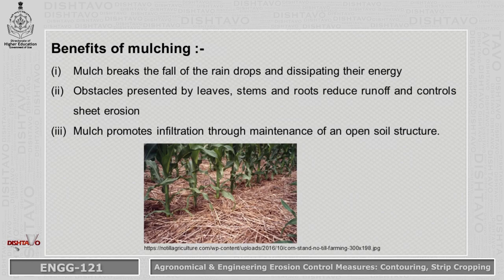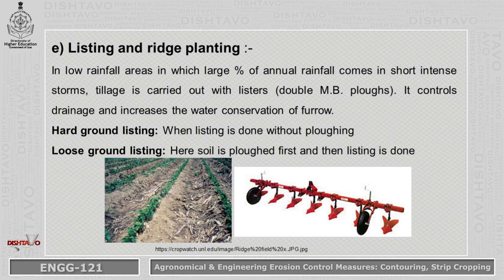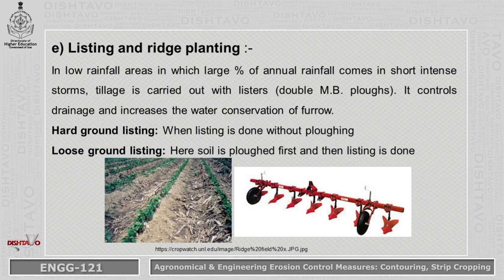Benefits of mulching include breaking raindrops and dissipating their energy to avoid soil erosion, promoting water infiltration into the soil, and reducing evaporation from the soil. The final conservation tillage type is Listing and Ridge Planting. There are two types: hard ground listing, done without plowing, and loose ground listing, done after plowing. This practice is followed in low-rainfall areas where annual rainfall comes in short intense storms. Tillage is carried out with listers like a double moldboard plow.